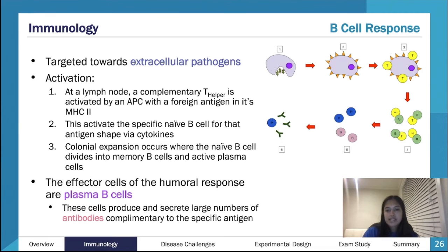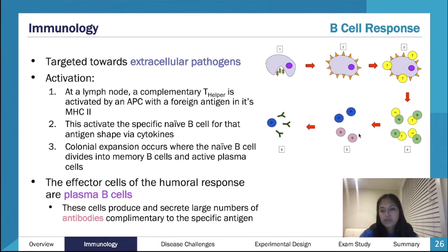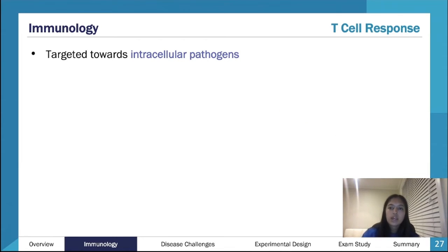Plasma B cells produce antibodies - that's the idea. This shows our initial infection: antigen presenting cells, T cells and B cells being activated, plasma cells producing antibodies, which look like little Y shapes. T cell responses are targeted towards intracellular pathogens - think viruses and cancer.